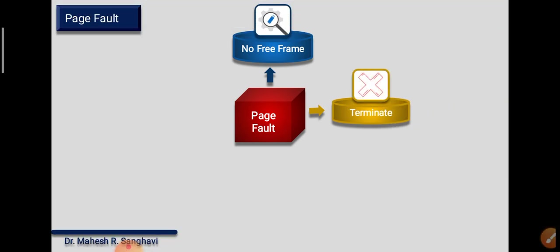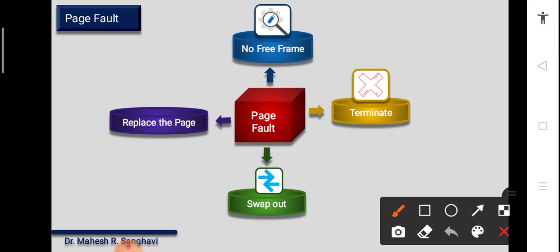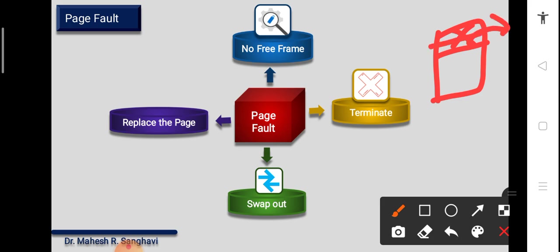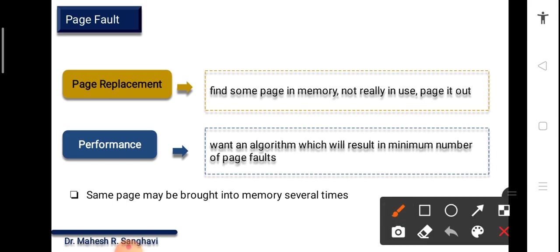Page fault can occur due to four major reasons: no free frame available, a process suddenly terminates, swapping is occurring, or page replacement is needed. When there is no free frame, we need to swap out one process, freeing its frames, then replace the page to resolve the page fault. Page replacement is a technique requiring an algorithm to decide which page goes in and which goes out — this is page replacement performance, which depends on minimizing page faults.